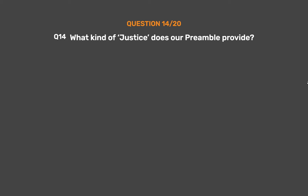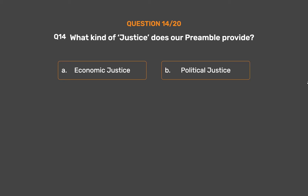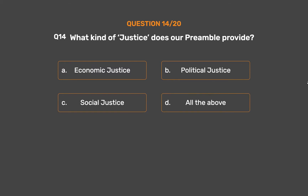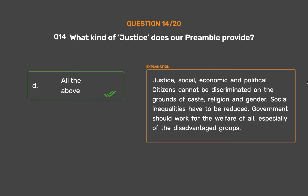Question 14: What kind of justice does our preamble provide? Option A: Economic justice. Option B: Political justice. Option C: Social justice. The correct answer is Option D: All the above. Justice — social, economic and political. Citizens cannot be discriminated on the grounds of caste, religion and gender. Social inequalities have to be reduced. Government should work for the welfare of all, especially of the disadvantaged groups.